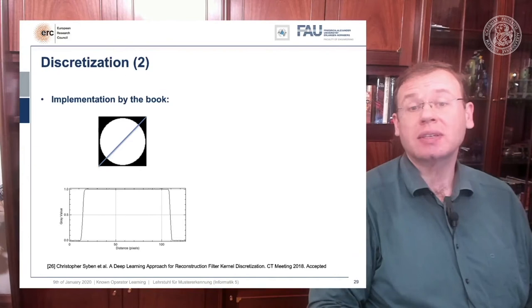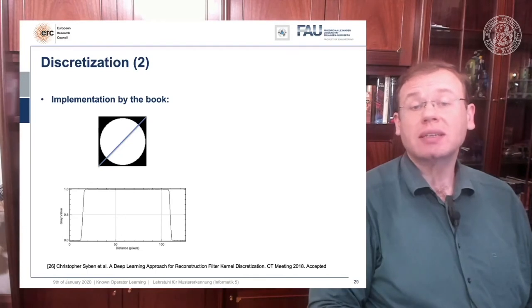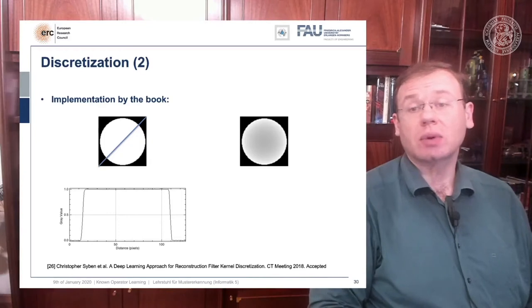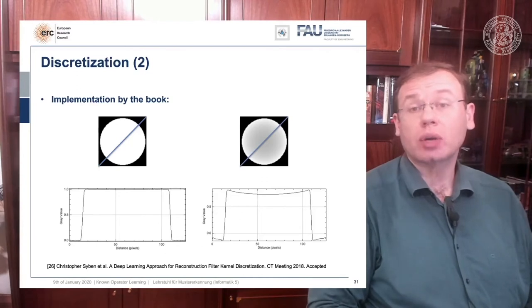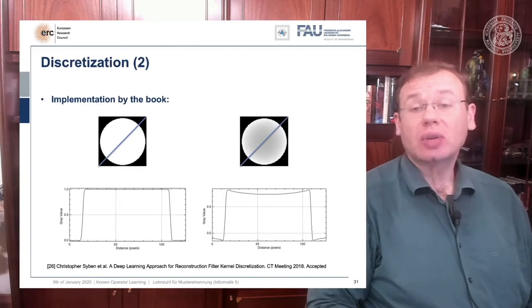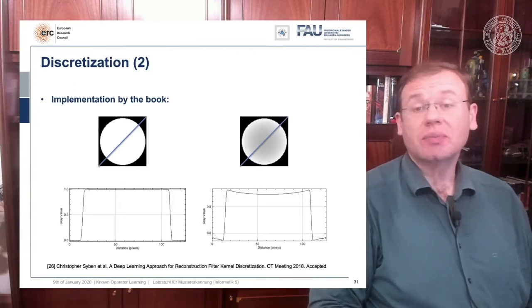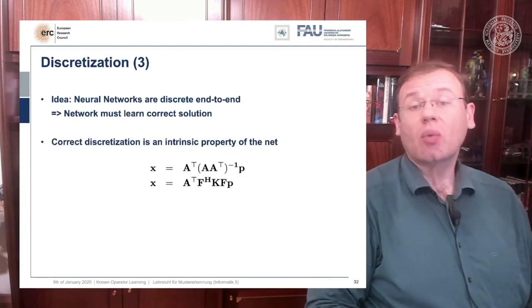Everything is one within the cylinder and outside of the cylinder it's zero. We're showing this line plot here along the blue line through the original slice image. Now if you just implement filtered back projection as you find it in the textbook you get a reconstruction like this one. A typical mistake is that you choose the length of the Fourier transform too short and the other one is that you don't consider the discretization appropriately.